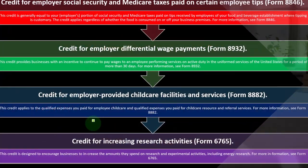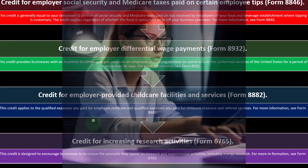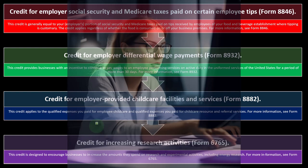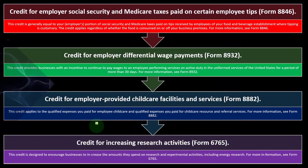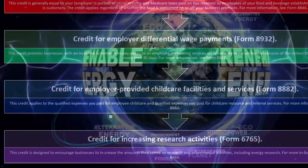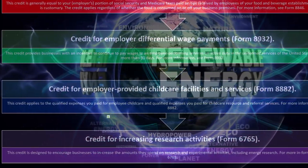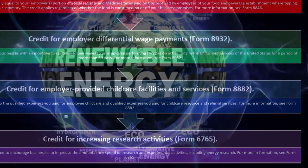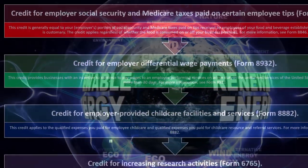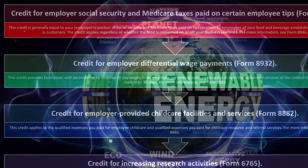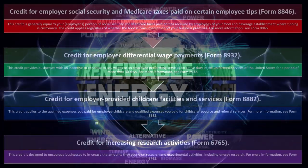The Credit for Increasing Research Activity is on Form 6765. This credit is designed to encourage businesses to increase the amounts they spend on research and experimental activities, including energy research. For more information, see Form 6765.